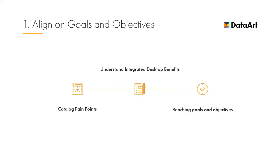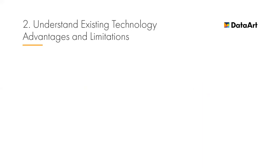Other typical pain points may include costly and time-consuming modernization of legacy applications, lack of data flow automation between existing applications, costly and lengthy onboarding of applications into enterprise environments — especially a big issue for software product companies targeting enterprise customers — and slow and painful product rollouts and upgrades. Once you identify these pain points and align stakeholders on what you are solving for, you can link them to your desired business outcomes: faster product innovation, reduction of manual work, better user experience, faster application onboarding, and so on.